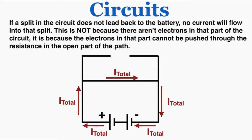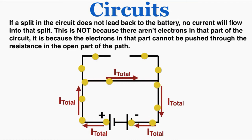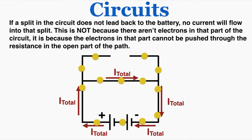If a split in the circuit does not lead back to the battery, no current will flow into that split. This is not because there aren't electrons in that part of the circuit — it's because the electrons in that part cannot be pushed through the resistance in the open section of the path. The electrons can only flow in the closed part of the circuit.